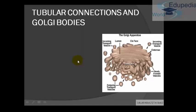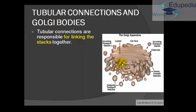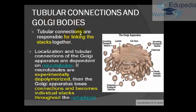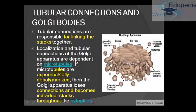Now, regarding tubular connections and Golgi bodies: how are these Cisternae associated in stacks? There is no adhesive holding them together, so how are they always together? It is because of tubular connections, which are nothing but microtubules. Scientists have already experimented that if we experimentally depolymerize these microtubules, the Golgi apparatus loses its connections and the stacks become individual units scattered throughout the cytoplasm. This experiment further proved that microtubules are what keeps the Cisternae stacks together.